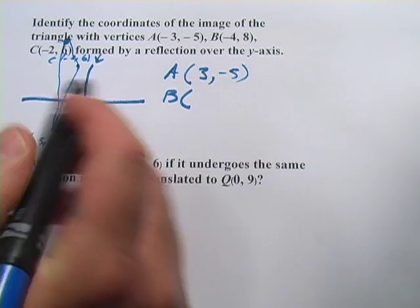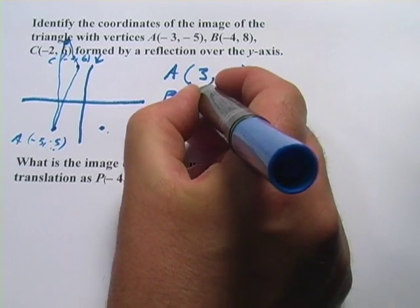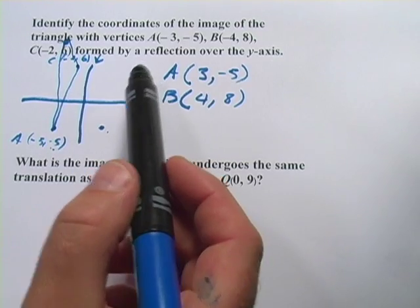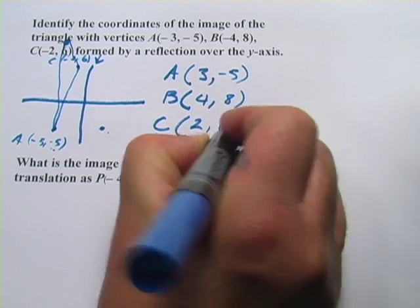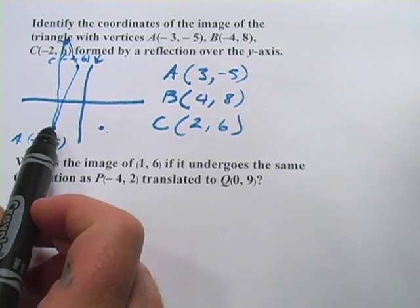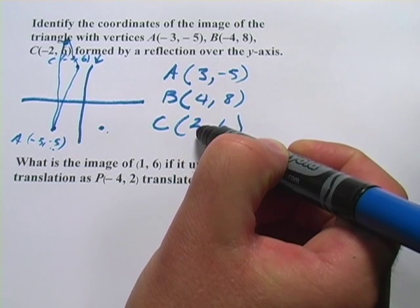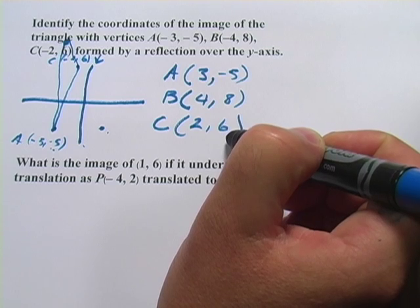B is going to be (-4, 8), so it's going to be (4, 8) now that we're reflecting over here. Keep the y-coordinates as they are. C becomes (2, 6).